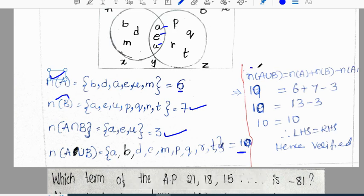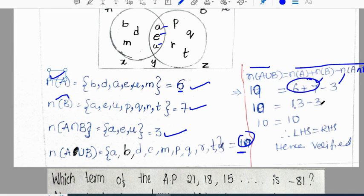We will use the formula left hand side and right hand side: n(A ∪ B) = n(A) + n(B) - n(A ∩ B). Substituting: 10 = 6 + 7 - 3. 6 + 7 = 13, 13 - 3 = 10. Clearly LHS and RHS are equal and is verified. Therefore, n(A ∪ B) = n(A) + n(B) - n(A ∩ B).